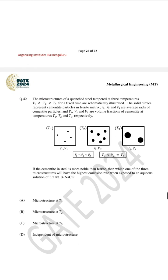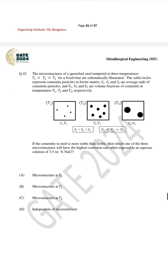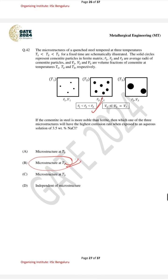For question number 42, regarding microstructure — there was some mistake in our predicted answer key — the correct answer is the microstructure of T2, which has the highest corrosion rate. We will discuss this in detail in upcoming videos when the full solution of the GATE 2024 paper is covered.